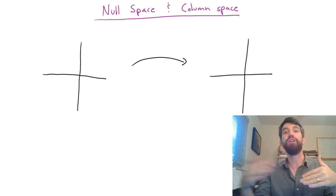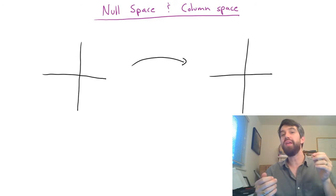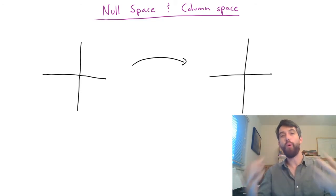Associated to a linear transformation, that is, associated to a matrix, there's going to be a bunch of different very important subspaces. And so we're going to look at today, in this video, two different subspaces, the null space and the column space.